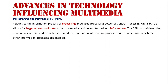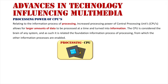The more power we have there, the smarter our system is and the more it can do. The CPU is considered the brain and as such it is related to the foundation information process of processing, from which the other information processes can be enabled. Here is our CPU — it's a little chip that sits on the motherboard, and through the bus lines and the ports on the motherboard, it's connected to every other component of the system.